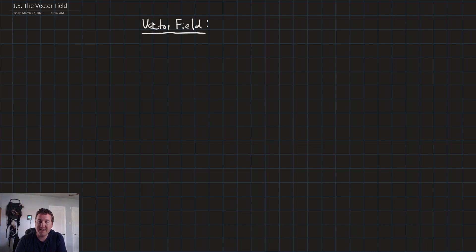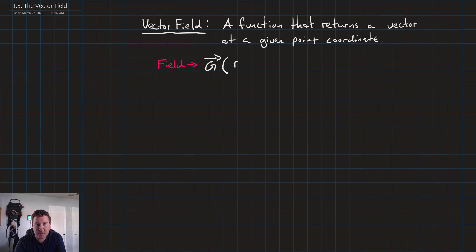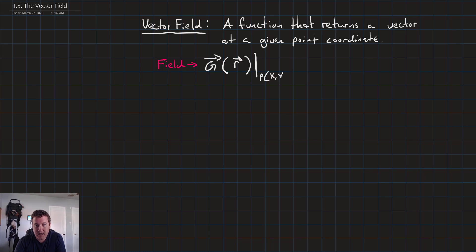A vector field is defined as a function that returns a vector at a given point coordinate. So we might have our vector field g, and it's going to be a function of some smaller vector. Remember, to return a vector we have to start with a vector. And we'll evaluate that at some point with coordinates x, y, and z. So let's do an example.